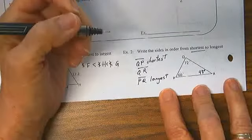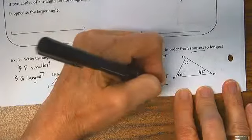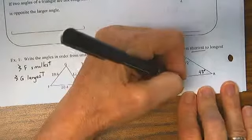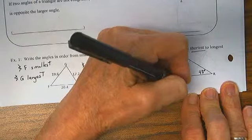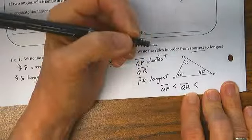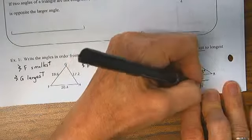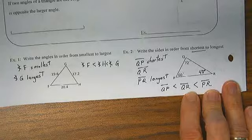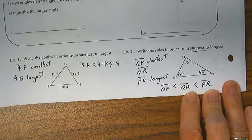What would that look like in math? Segment QP is less than segment QR is less than segment PR. And there we go. Second page of notes. Day one is done.